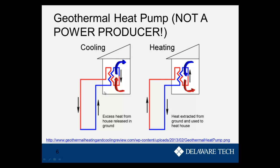Instead of rejecting heat to the air, we reject it into the ground. The heat from our house goes into the ground, which cools off the refrigerant flowing through the system, and the cold goes back into our house. In heating season, we do the exact opposite — we put the cold from the house into the ground and take the heat back in. We're just moving heat around, and it's easier to do that with a constant 50 or 60 degree source rather than 0 or 100 degree outside air.